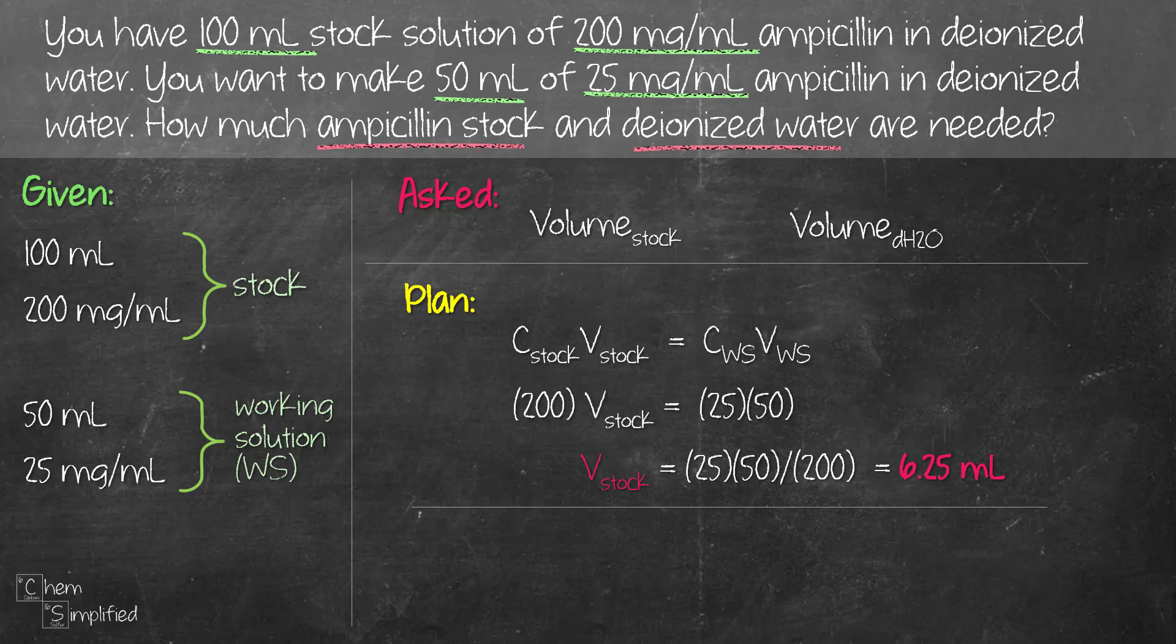So basically what it means is we need to take 6.25 ml of that 200 mg per ml stock solution and then we need to add water and then that is going to give us that 50 ml working solution.